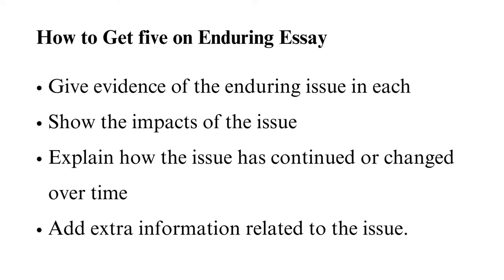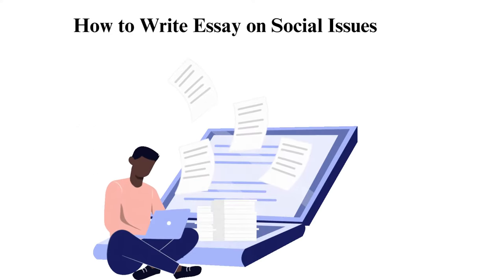How to get a five on the Enduring Essay. To earn all five-point credits, observe the following: have an informative introduction, body, and conclusion. Use all the given guidelines to ensure all three sections stand out. Identify the Enduring Issue using the tips provided, discuss it using evidence and your own experience, and use at least three documents — giving evidence of the Enduring Issue in each, showing the impacts, explaining how the issue continued or changed over time, and adding extra information related to the issue.